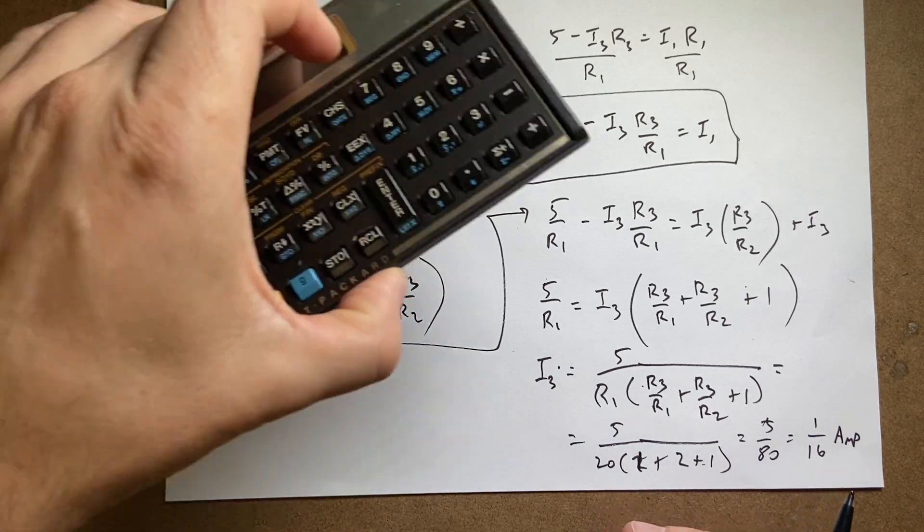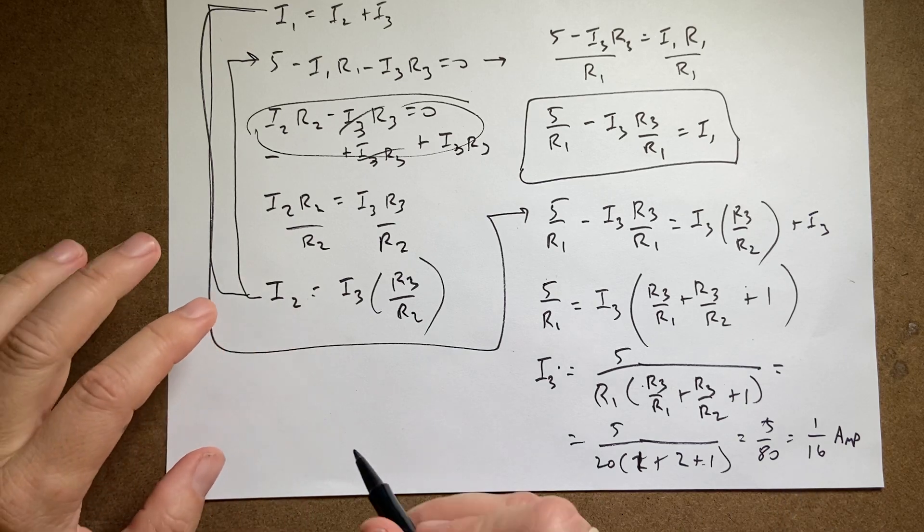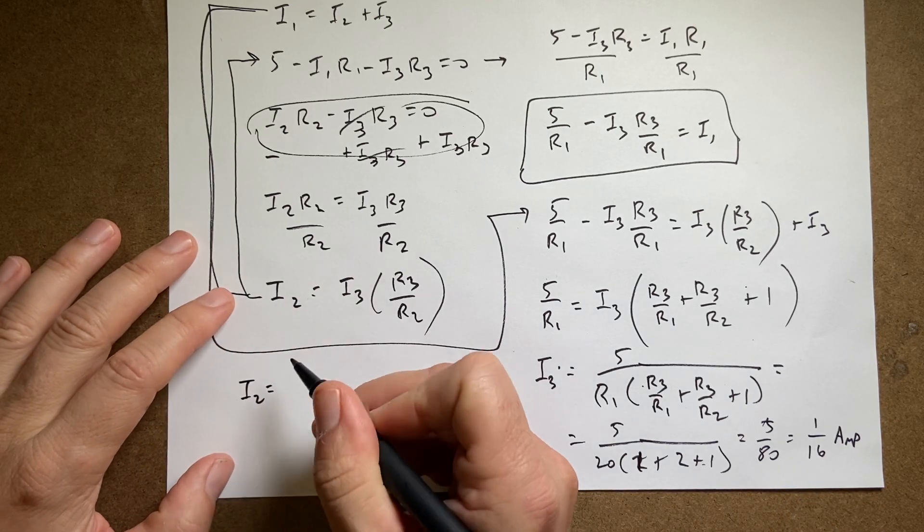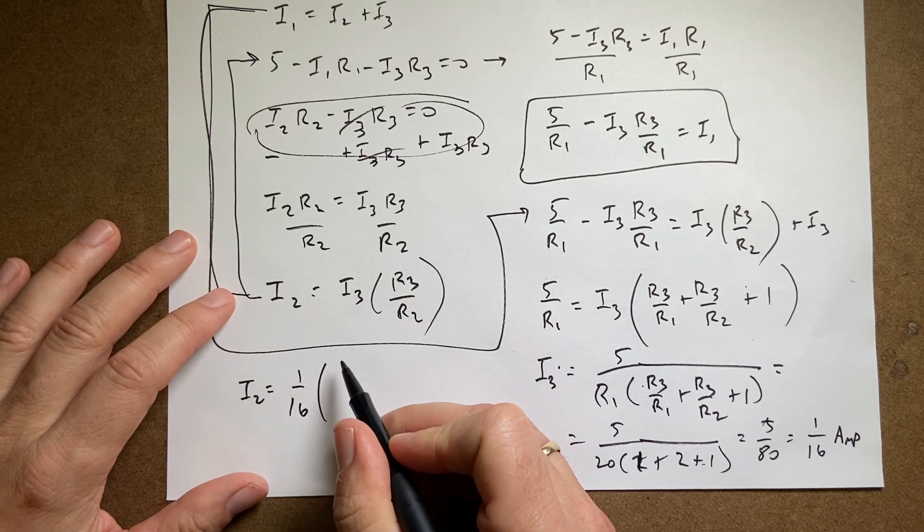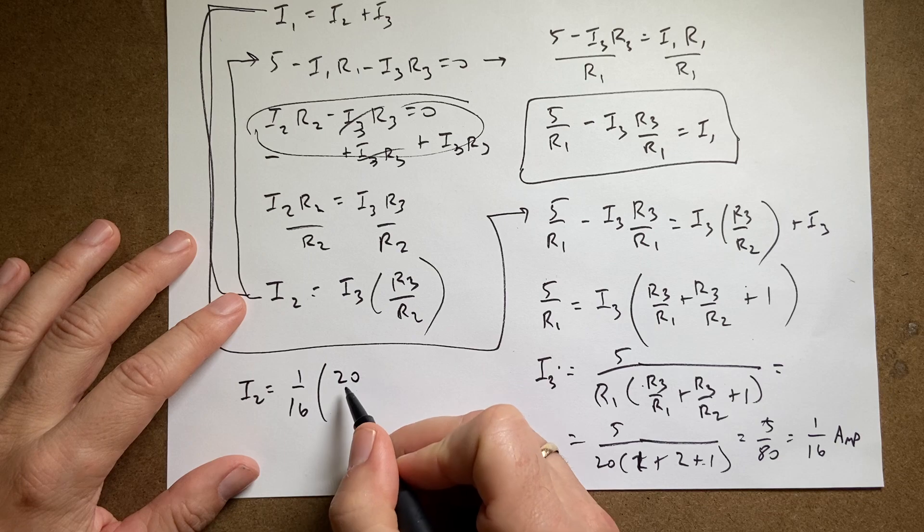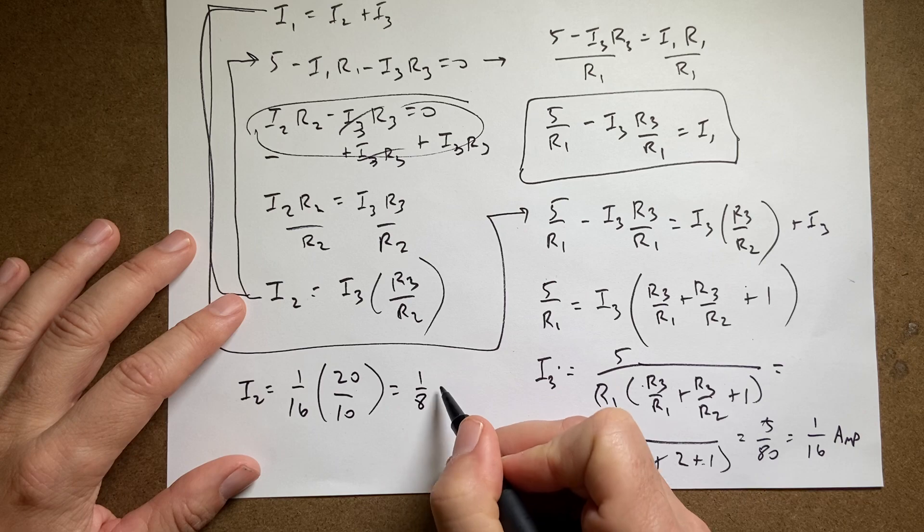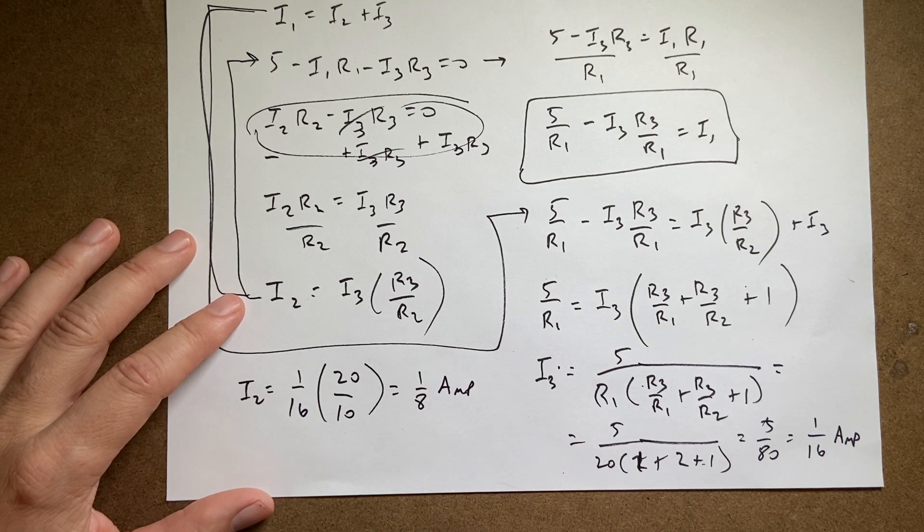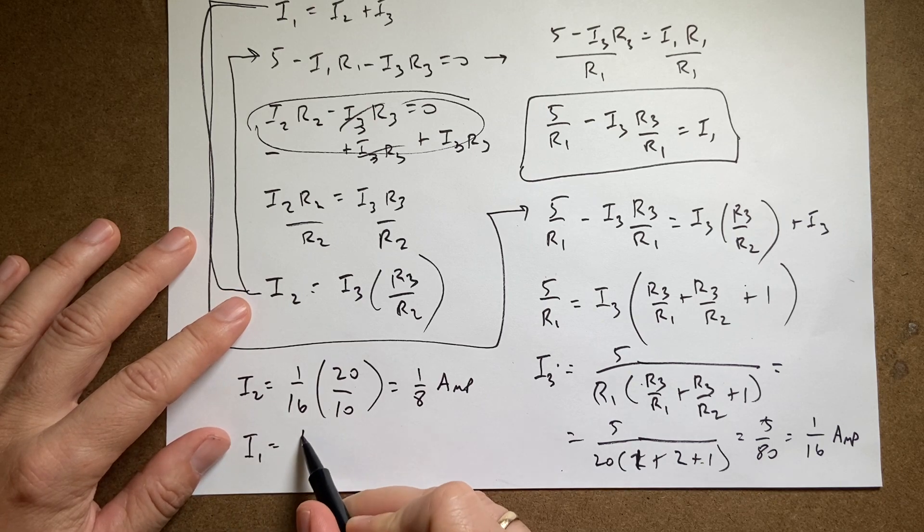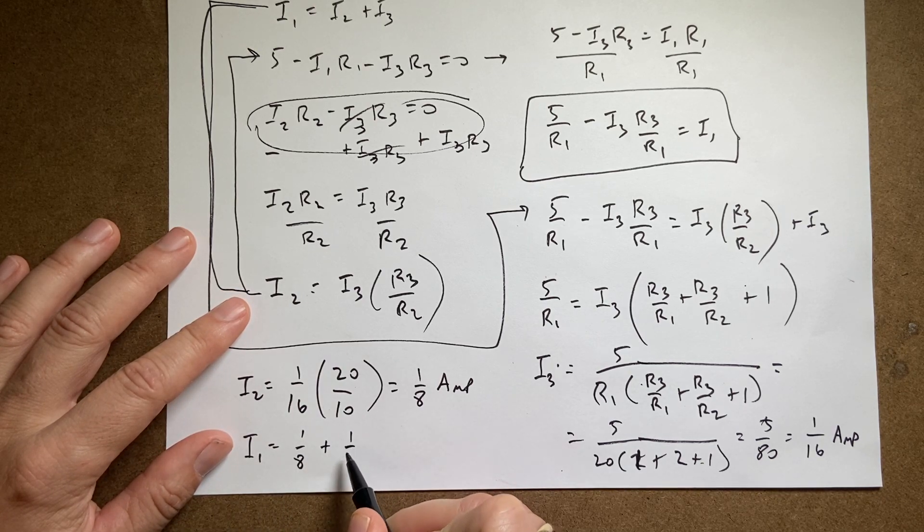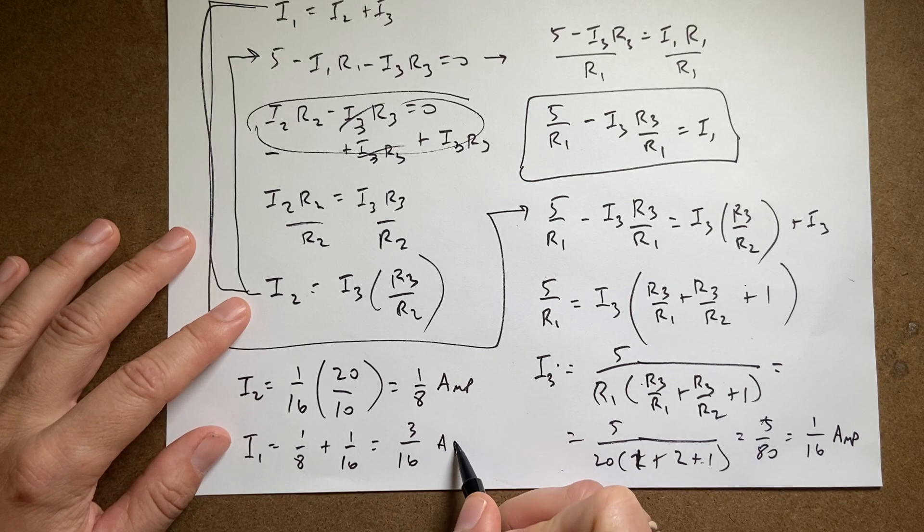Okay. Now I can go back. I have I3. I can find I2. So I2 is equal to I3, which is 1/16, times R3, which is 20, divided by R2, which is 10. So I get 1/8. Now I can go up here and find I1. I1 is going to be 1/8 plus 1/16 is going to be equal to 3/16 amps. Done.